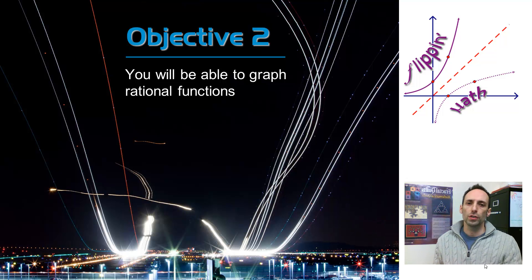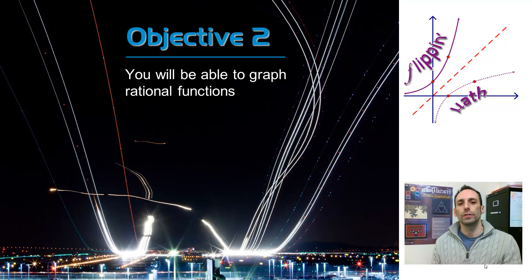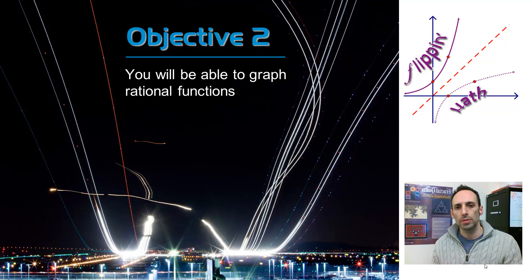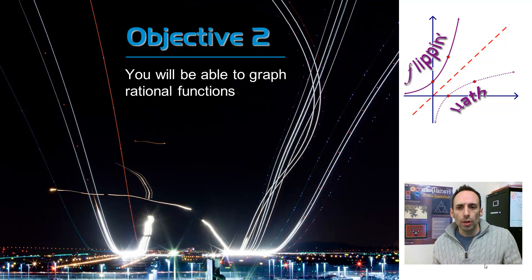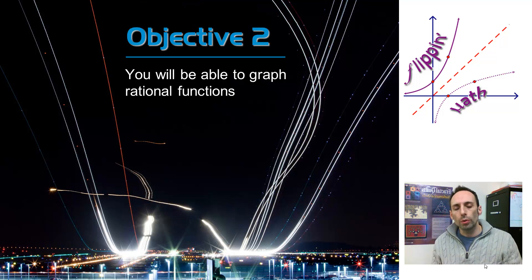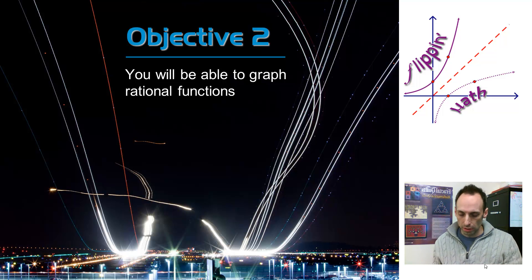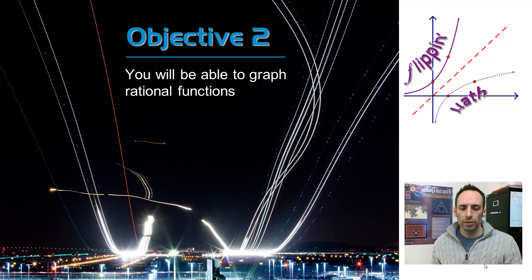Alright, here we are in objective 2 where we're actually going to graph some rational functions. In this picture is one of those time-elapsed photos of airplanes taking off at night and they kind of look like some slant asymptotes. We know if we saw a bigger picture though they wouldn't be, because they'd level off a little bit and then eventually land. But it's a pretty sweet looking picture.